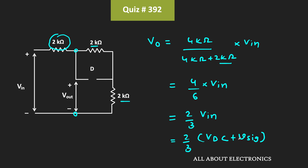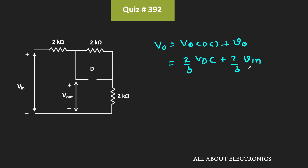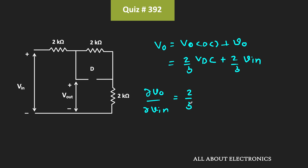If you see the output, it will contain two terms. That means Vout will have one term that is Vout_DC and the second term is small Vout, that is the small signal component. So in this case, Vout_DC is equal to Vdc, while this small signal component is equal to 2/3 times Vin, where Vin is our small signal input. So if we differentiate this output with respect to Vin, then dVout/dVin is equal to 2/3, because the DC term is static. This is the small signal gain when the diode is in the off condition.